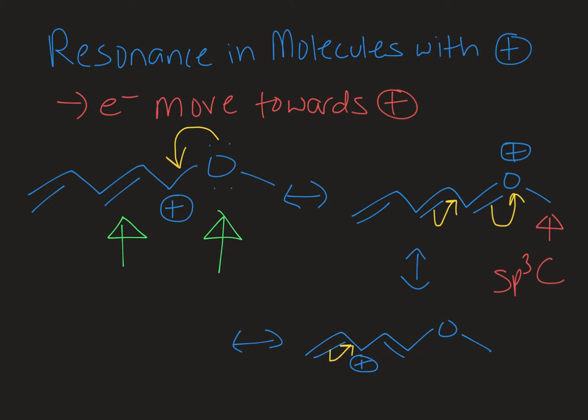So these electrons could fold in because they are next door to one another and that would give me this structure with my carbocation on the end. And now I don't have anything on the other left hand side so there's no further that I can go.